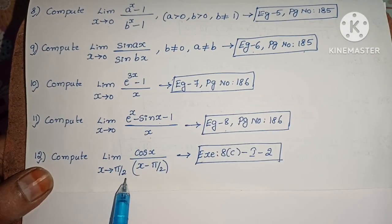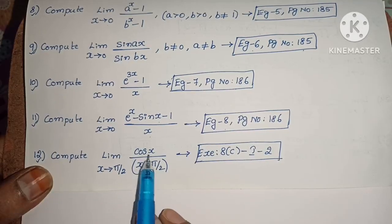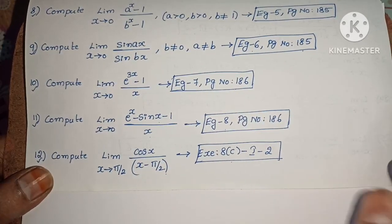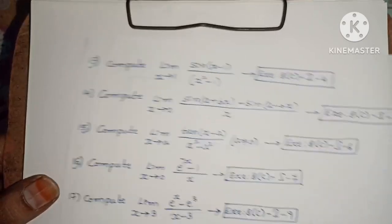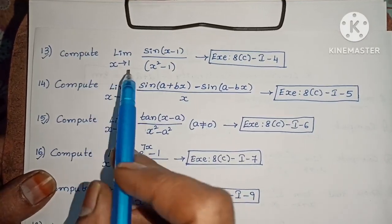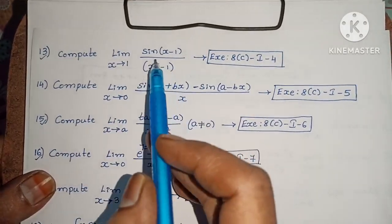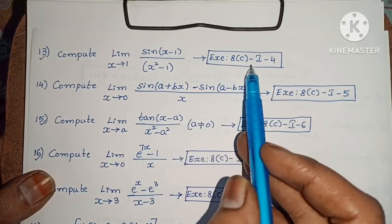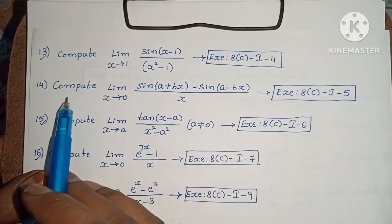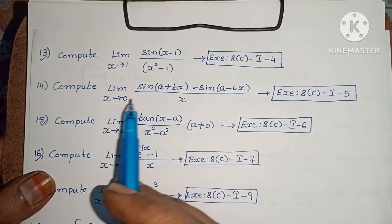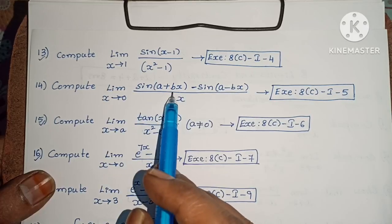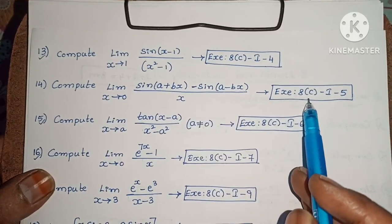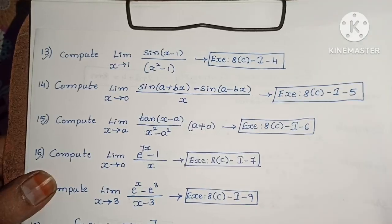Next: Compute limit extends to pi by 2 of cos x by x minus pi by 2. Exercise 8c, first roman law, second one. Next: Compute limit extends to 1 of sin of x minus 1 by x squared minus 1. Exercise 8c, first roman law, fourth one. Next: Compute limit extends to 0 of sin of a plus bx minus sin of a minus bx by x. Exercise 8c, first roman law, fifth one.